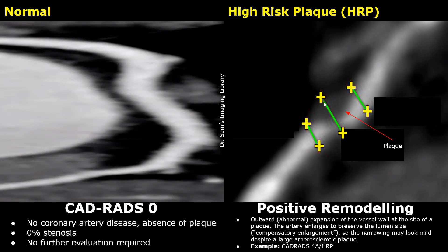The stenosis seems to be between 70% and 99%, so this will be classified as CADRADS-4A HRP. The plaque burden score is not needed if HRP is used.